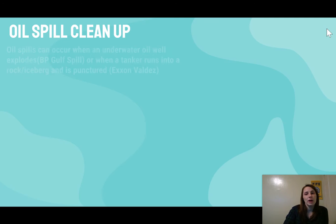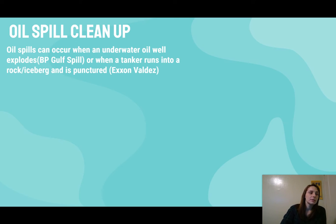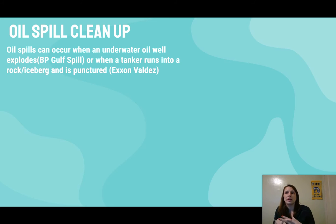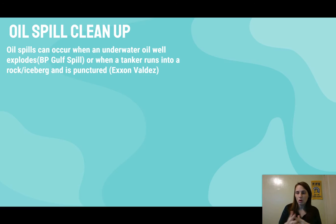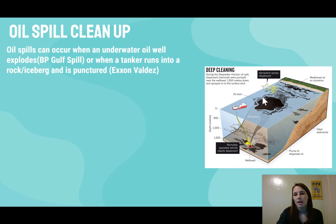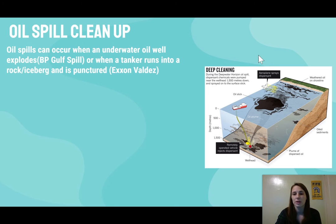When it comes to oil spill cleanup, there are a variety of approaches, but there are two different ways oil spills can occur. The first is when an underwater oil well explodes, creating plumes coming up from the bottom — as happened in the BP Gulf spill. The other is when a tanker runs into a rock or iceberg, is punctured, and oil spreads mostly at the surface — as happened with the Exxon Valdez. Because oil is less dense than water, it rises to the top even when released from the bottom.